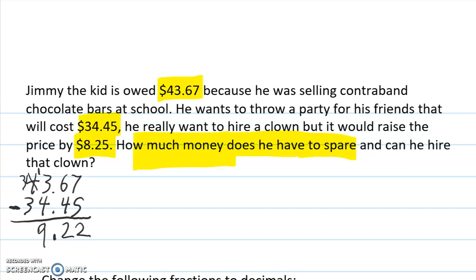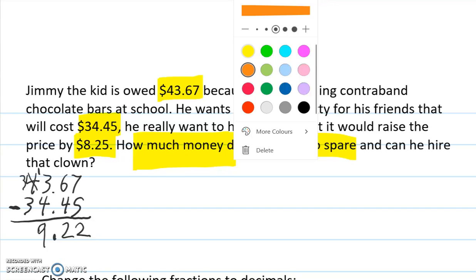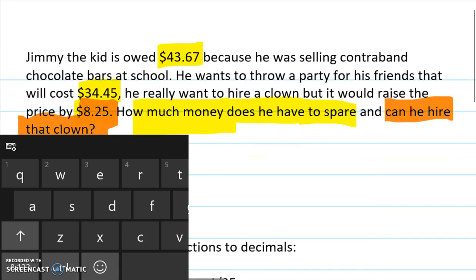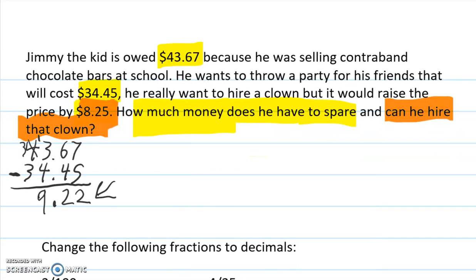So, is the next part of our question here. Next part of our question here is, can you hire the clown? Well, how much did the clown cost? It cost this $8.25. So, is this enough money to pay for the $8.25 clown? Well, yes. $9.22 is bigger than $8.25. So, we can hire the clown.